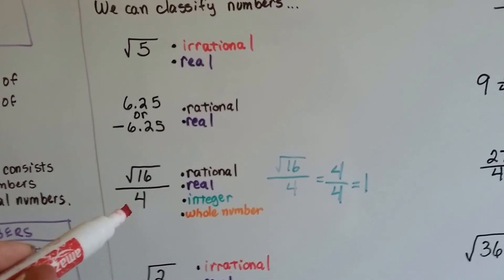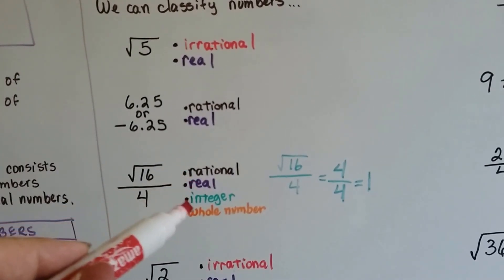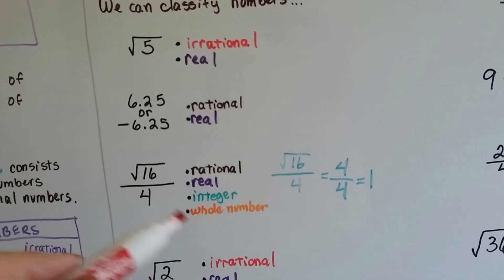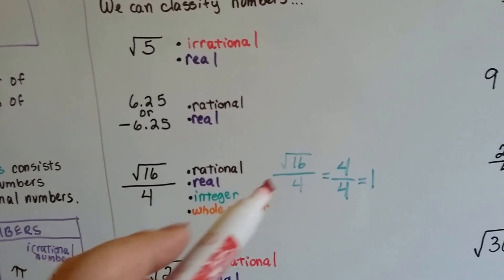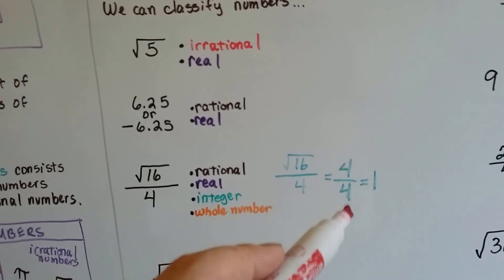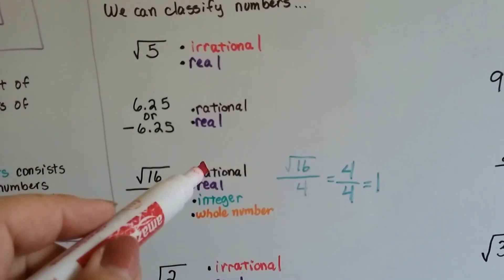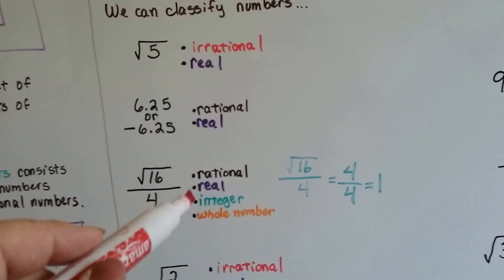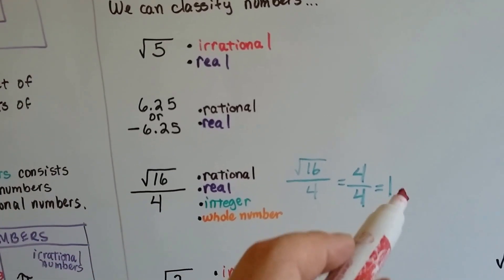The square root of 16 over 4, that's rational, real, an integer and a whole number. Because once it's simplified, the square root of 16 is 4. So, that's 4 over 4. Same numerator and denominator means it's a 1. So, not only is it a rational number, but it's a real number and it's an integer and it's a whole number. It's a 1.